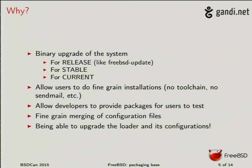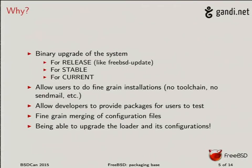So why do we want to package the base system? We want to do binary upgrades. Right now we have only one tool for binary upgrades: FreeBSD update, which allows you to upgrade for security patches on a release or to move from release to release. But if you want to track -current or -stable, you have to build everything yourself, which is not user-friendly. To get more people involved — more people tracking head, more people tracking stable — we need to allow users to upgrade their system and stay in sync with the branch they want to test, and this will also get us more feedback before the release phase.